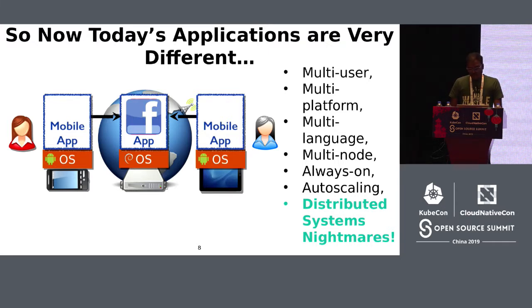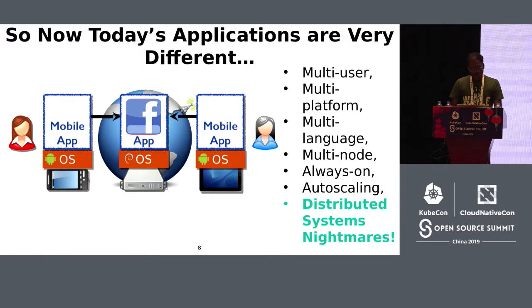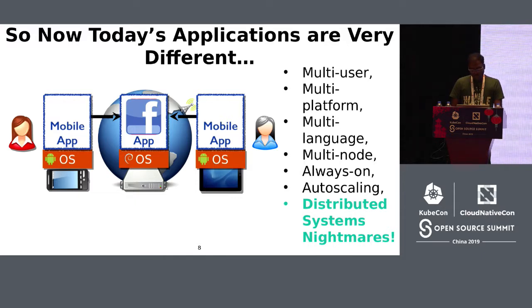In summary, all this adds up to significant challenges for application programming. They have to coordinate data and computation across distributed nodes. They have to meet application requirements with guaranteed performance despite limitations and failures. And they have to do all this across different programming environments and varying hardware resources, which means application development is really very hard with multi-user, multi-program, multi-platform, multi-node, and so on.